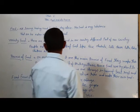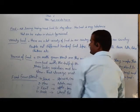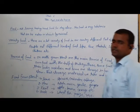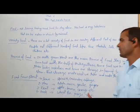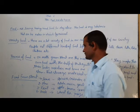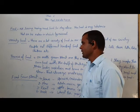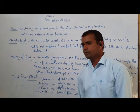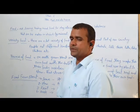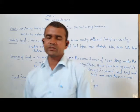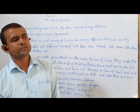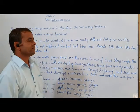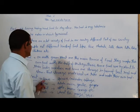Food from plants. We obtain different kinds of foods from plants. First, from leaves — spinach, coriander.